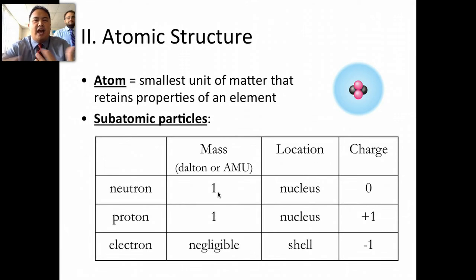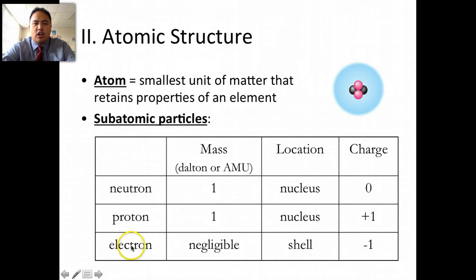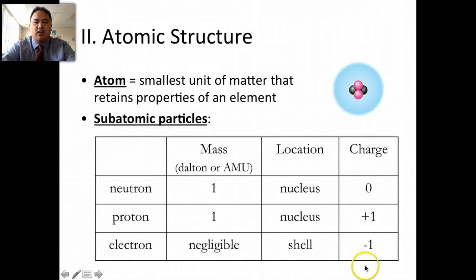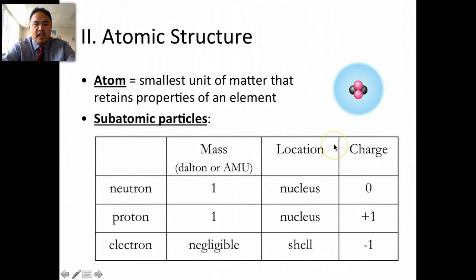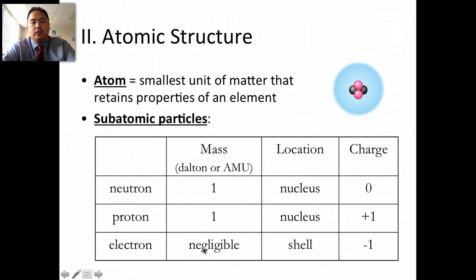Then we talked about an atom — a review from chemistry. An atom is the smallest thing in matter. It's made up of three parts: neutron, proton, electron. A neutron has no charge, a proton has a positive charge, and an electron has a negative charge. The neutrons and the protons are in the middle, in the nucleus, and the electrons are on the outside. Neutrons and protons have a weight of one-to-one, and electrons have basically negligible mass.